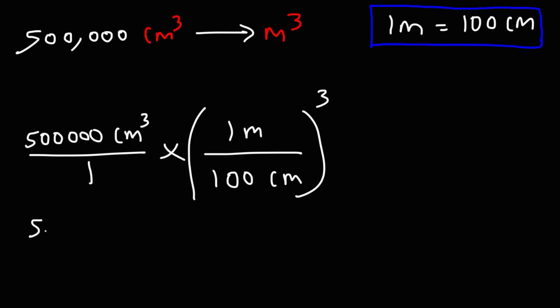If we do that, note what's going to happen. One meter to the third power - if you multiply one meter by one meter by one meter - you're going to get one cubic meter. Now, 100 centimeters to the third power, that's 100 centimeters times 100 centimeters times 100 centimeters, which is 100 to the third power. That's a million. So this is going to be a million cubic centimeters.